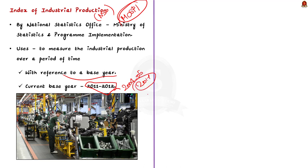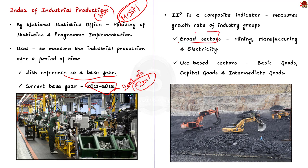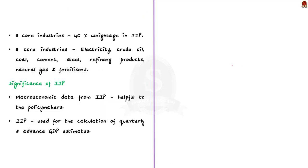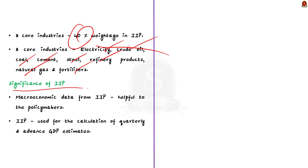IIP is a composite indicator that measures the growth rate of industry groups classified into two sectors: the broad sector — mining, manufacturing and electricity — and the use-based sectors — basic goods, capital goods and intermediate goods. Notably, the eight core industries in India comprise about 40% of the weightage in IIP. These eight core industries are electricity, crude oil, coal, cement, steel, refinery products, natural gas and fertilizers. IIP is one of the prime indicators of economic development in India; the macroeconomic data from IIP is important for policymakers and is also used for calculating quarterly and advanced GDP estimates.